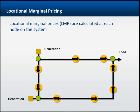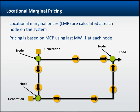Prices under the integrated model are called locational marginal prices, or LMPs. This means that a unique marginal clearing price is calculated at multiple points around the system called nodes. A node is a point where supply enters the system, such as a generator bus bar or a transmission intertie, or a load takeout point such as a distribution substation. A locational marginal price is calculated for each node based on the last megawatt plus one selected to provide power at that node.